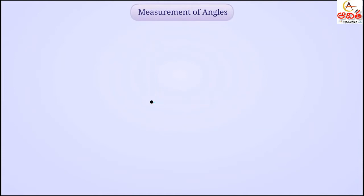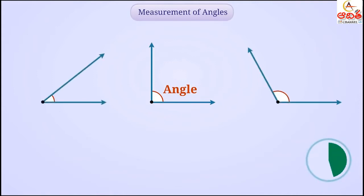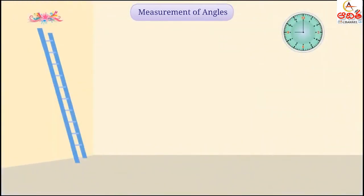We learned that two rays starting from the same point form an angle. Are all angles the same? Think a little. No. We see that the angle formed between the wall and the floor is different from the angle formed between the ladder and the wall or the angle formed between the ladder and the floor.